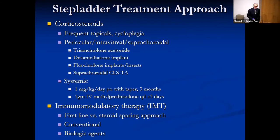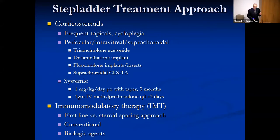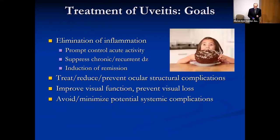Our approach to the treatment of non-infectious uveitis begins with establishing a diagnosis and excluding infection, then putting out inflammation with corticosteroids by any means necessary depending upon the type of inflammation and the diagnosis. We have a very low threshold for the implementation of immunomodulatory therapy in patients with chronic inflammation in order to either spare steroids or use as a first-line agent, consisting of both conventional and biological agents. The goals of our treatment are to eliminate inflammation, induce remission, prevent ocular structural damage, and avoid systemic complications.